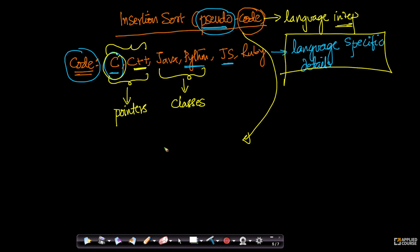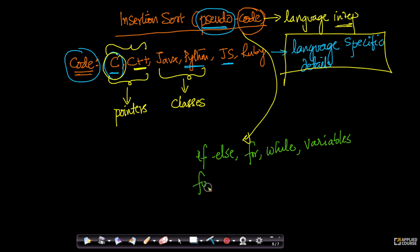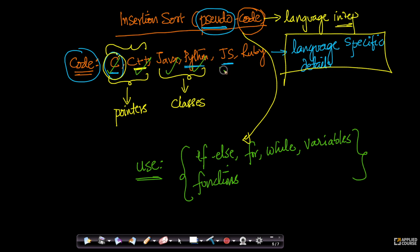There are some common programming themes in every language. Every language would have if-else statements, for loops, while loops, variables, and functions. So we will only use these simple ideas — these very simple constructs that are present in every programming language. We will write our code in a format called pseudocode. The reason we chose not to use any specific language is to avoid language-specific details and make your learning language independent.